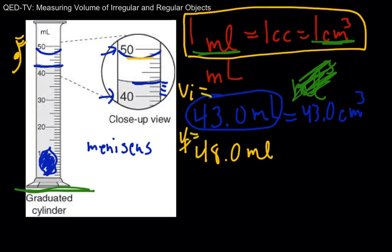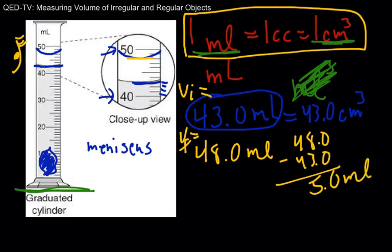So we'd say 48.0 milliliters is our final volume. This is our initial volume. And here's our final volume, 48.0 milliliters. And all we do then is subtract. And we subtract them. You get 48.0 minus 43.0. And you get 5.0 milliliters. So we'd say the volume of our object is 5.0 milliliters.